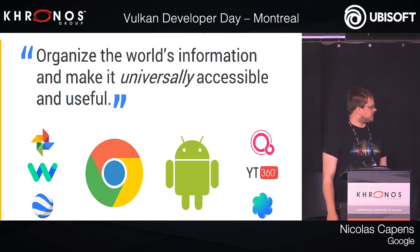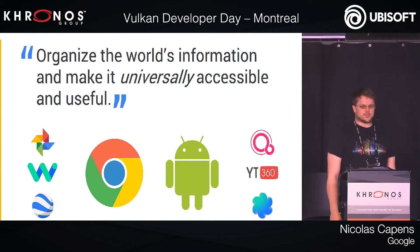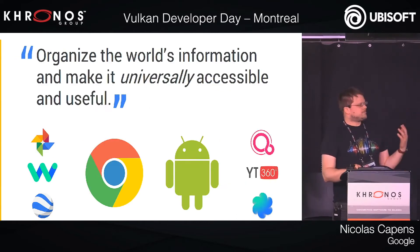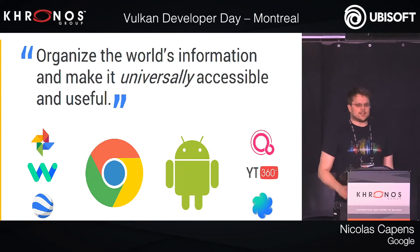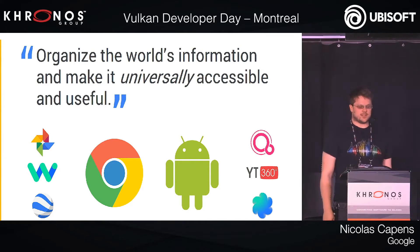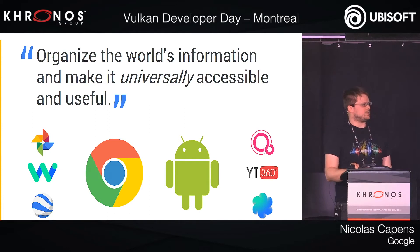There are some other projects that to some degree use SwiftShader mainly for testing. Going back to Google's mission — to organize the world's information, but it needs to be universally accessible — the useful part means it needs to be fast enough. SwiftShader tries to be as fast as possible on the CPU when you need it as a fallback.